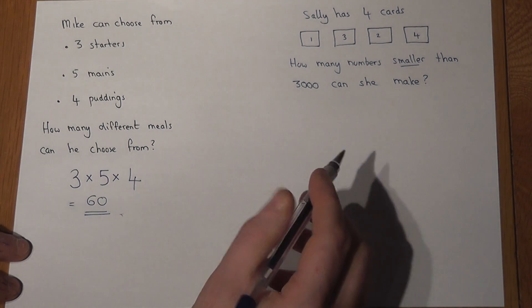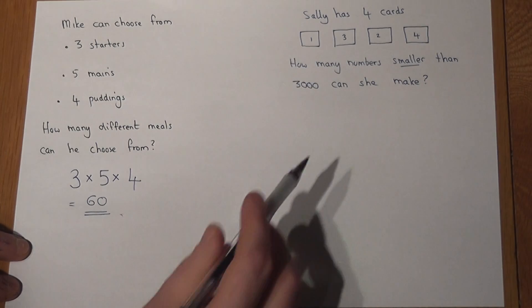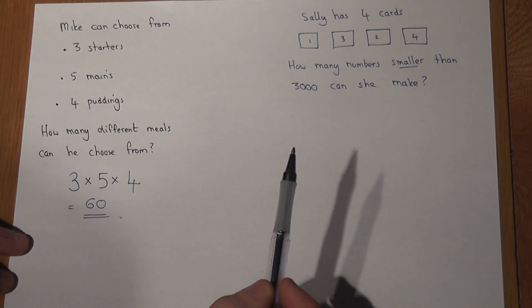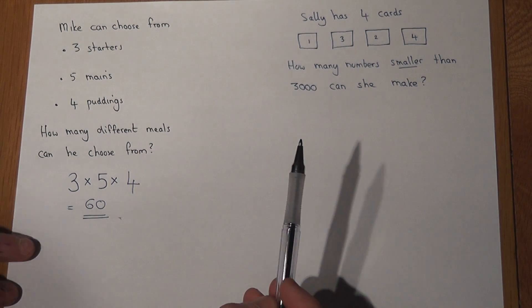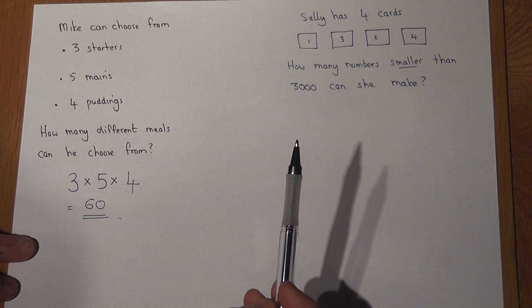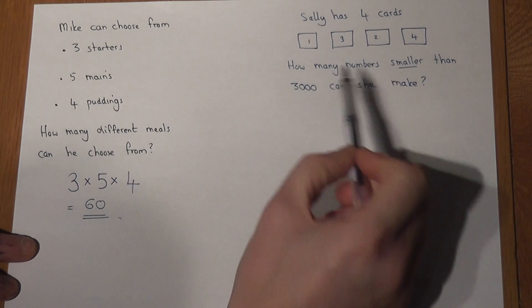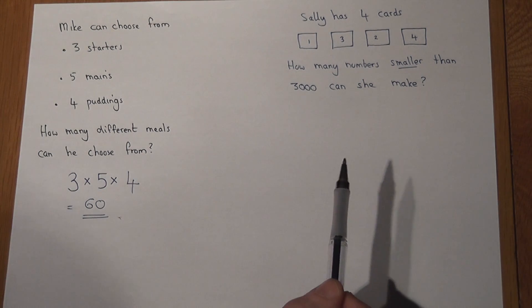Now then, the second example is a subtle variation on the same style problem. Sally's got four cards with the numbers 1, 3, 2, 4, and the question asks how many different numbers smaller than 3000 can she make.